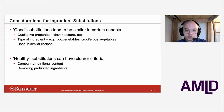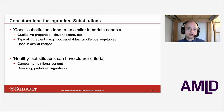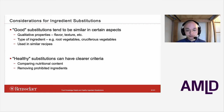In our work on ingredient substitutions, we considered several aspects for determining whether something is a good substitution and whether it's healthy. We felt that good substitutions tend to be similar in certain ways. The first is qualitative properties such as flavor and texture — properties not generally explicitly captured in recipes. So we needed to develop some proxy to capture this information. Another aspect is the type of ingredient: different root vegetables such as potatoes and carrots are oftentimes interchangeable in some recipes, as are cruciferous vegetables like cauliflower and broccoli.